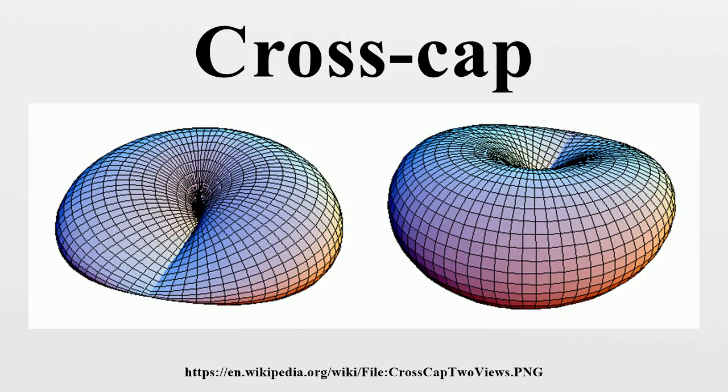A cross-cap that has been closed up by gluing a disk to its boundary is a model of the real projective plane P2. Two cross-caps glued together at their boundaries form a model of the Klein bottle, this time with two intervals of self-intersection and four points where this model is not an immersion.